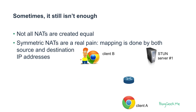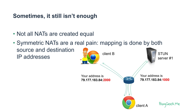Sometimes it works, but sometimes it isn't enough. It isn't enough, for example, when the client asks the server for its IP address and gets one back, but if it asks someone else, it will get a different IP address — either because the public IP will be different, or because the port will be different. This happens with something called symmetric NATs, and they are a real pain. The mapping is done between both the source and the destination IP address, and we cannot use the STUN mechanism to handle that. STUN servers that give us our public IP address will not work with symmetric NATs.